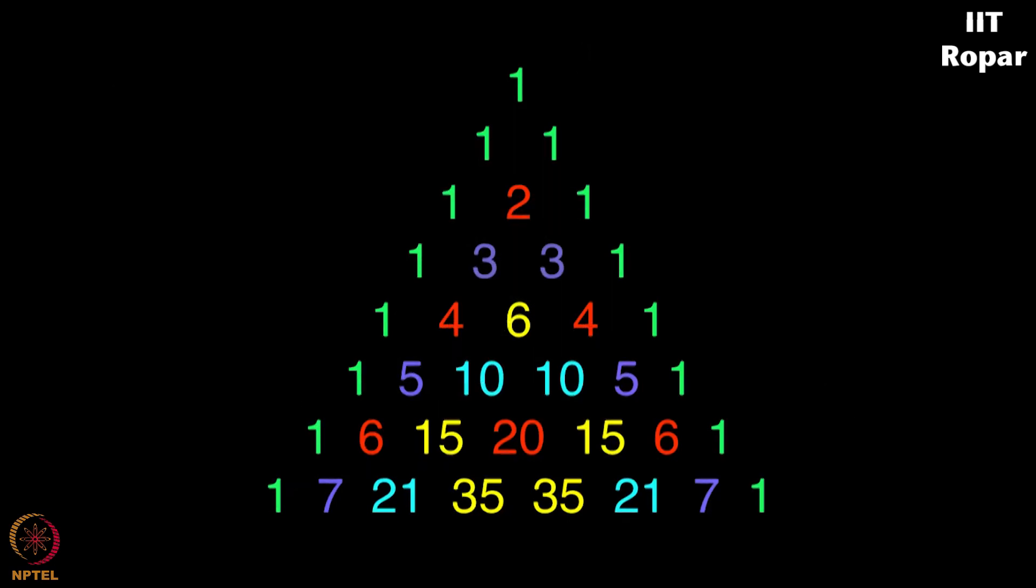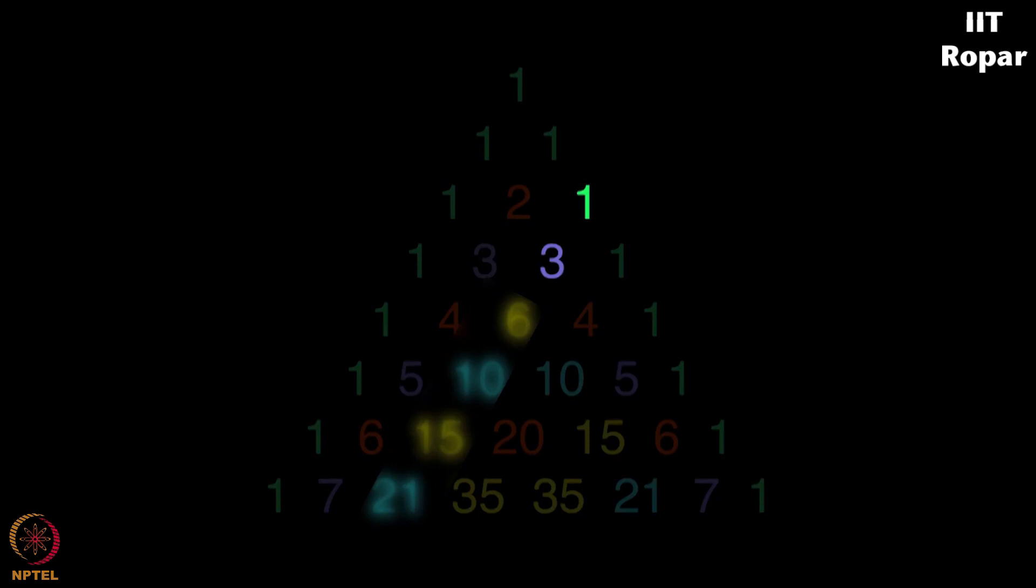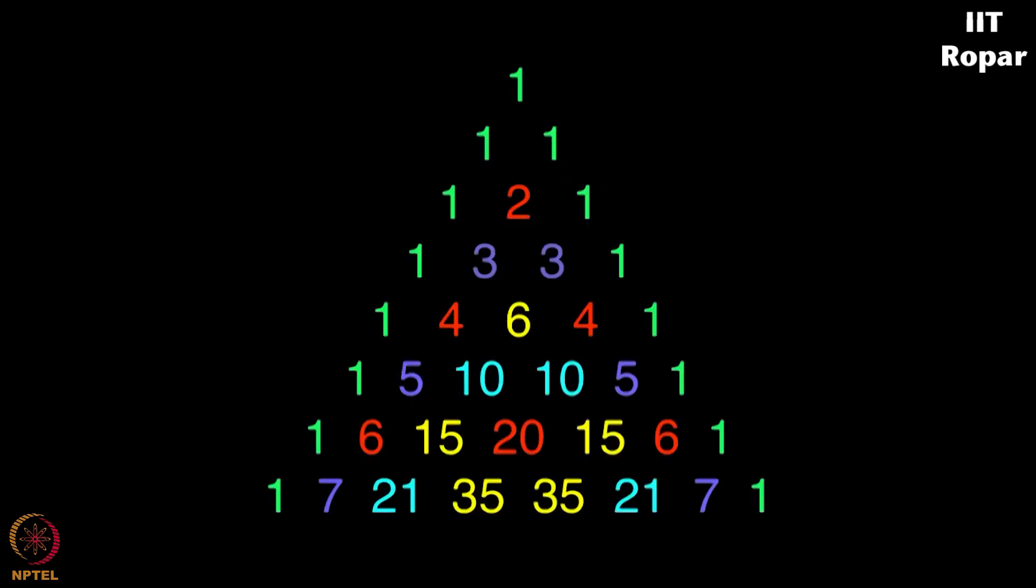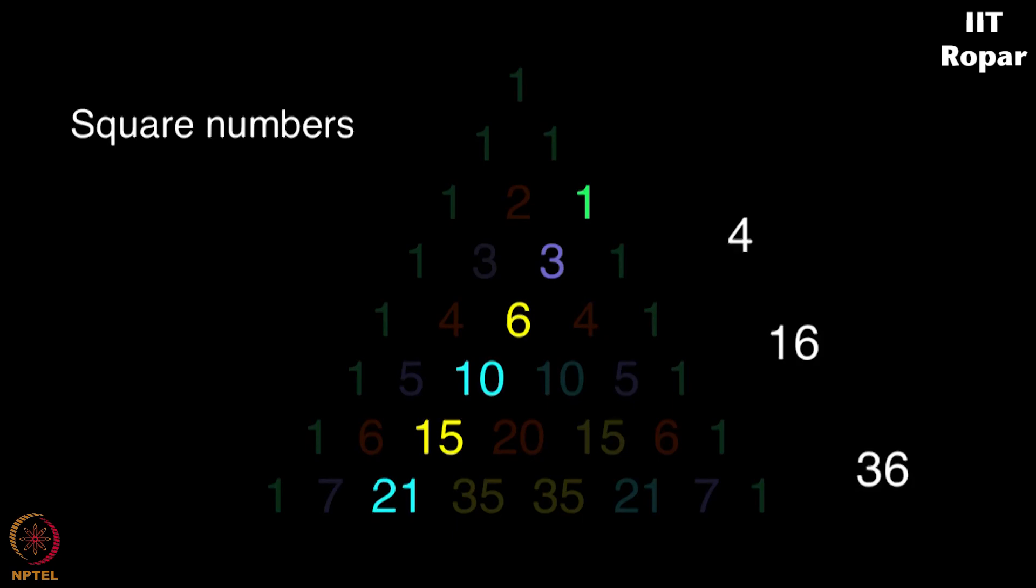Now observe this diagonal. What you see here is, consider these two elements: 1 plus 3 is 4 which is 2 square. Now these two elements, this is 6 plus 10 which is 16, this is 4 square. 15 plus 21 is 36 which is 6 square. So we got 2 square, 4 square and 6 square. So all the numbers here on this diagonal, as you can see, if you take the sum of consecutive numbers you get them as square numbers.